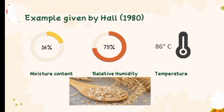The equilibrium moisture content is elaborated by an example given by Hall (1980). If wheat and oats having 16% moisture content are kept in an environment of 86°C and 75% relative humidity, wheat will absorb moisture and oat will lose moisture. This is because of the different vapor pressures of the moisture in wheat and oat. At these conditions, the vapor pressure of wheat is 0.454 lb/in², oat is 0.477 lb/in², and the vapor pressure of moisture in air at 86°C and 75% relative humidity is 0.461 lb/in².